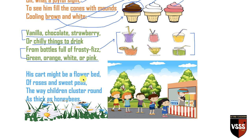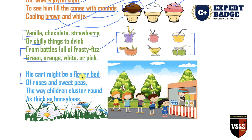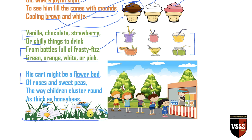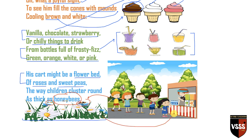'His cart might be a flower bed of roses and sweet peas.' The poetess is comparing the flower bed with the ice cream cart — the cart is like a garden, like a flower bed full of roses and sweet peas. Just as you see different insects and honey bees around flower beds, 'the way children cluster round as thick as honey bees' — the poetess is comparing the children with honey bees. Just as honey bees swarm around flowers, similarly many children gather around the ice cream cart to get ice cream.